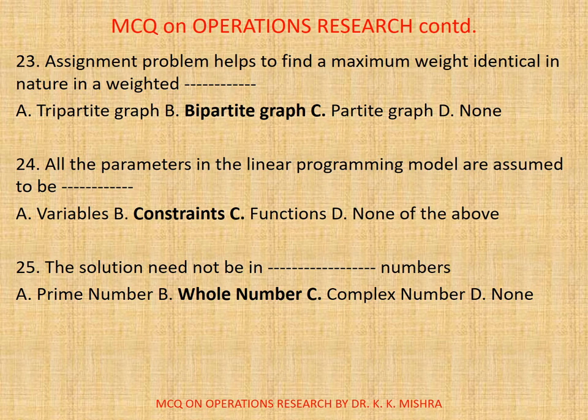Question 24. All the parameters in the linear programming model are assumed to be Dash. A, Variables. B, Constraints. C, Functions. D, None. Question 25. The solution need not be in Dash numbers. A, Prime Number. B, Whole Number. C, Complex. D, None. The correct option is B, Whole Number.